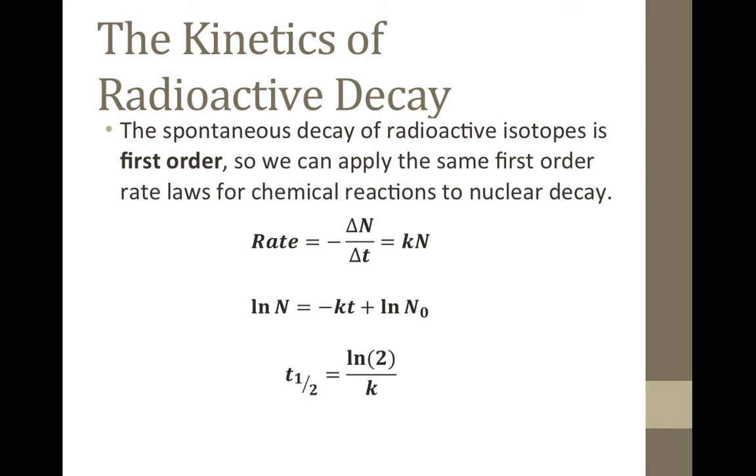Typically, in these equations, we use a capital N to represent either the concentration or the number of radioactive isotopes. Notice that in the expression for the half-life, the N does not appear because there's no concentration dependence to the half-life, just as there wasn't with first-order chemical reactions.